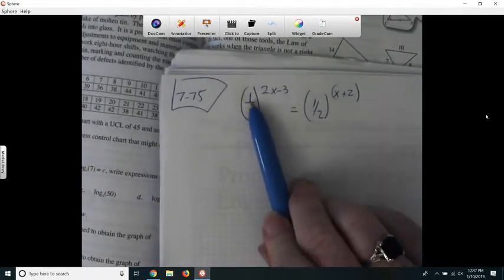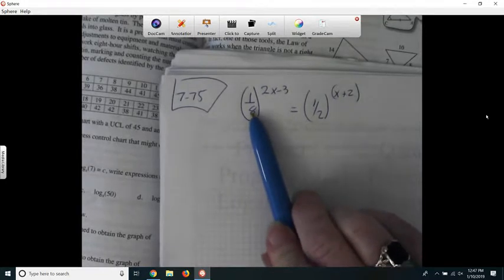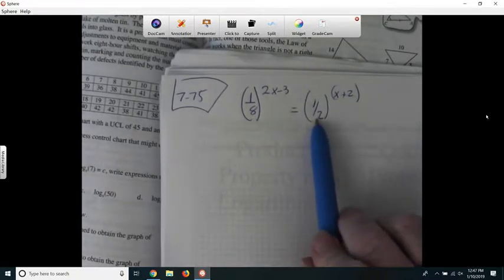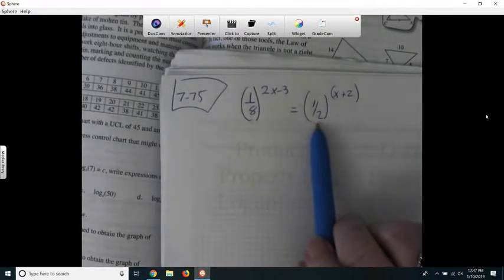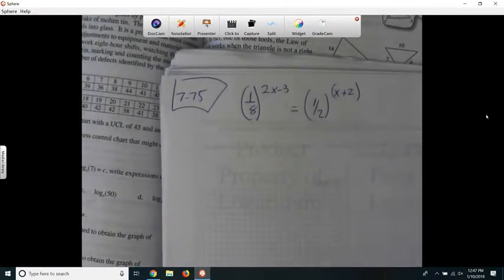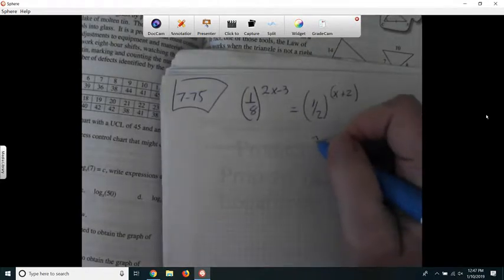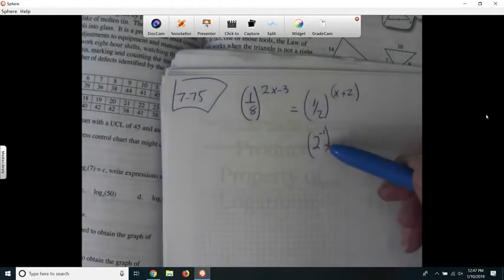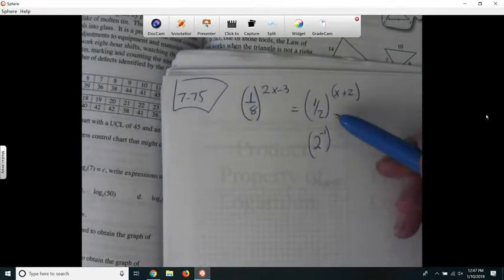But I feel pretty happy about this because I can write this as 2 raised to a power, and I can also write this as 2 raised to a power. I know that 1/2 can be 2 to the negative 1. Does anyone agree with rewriting it as 2 to the negative 1 for a half?